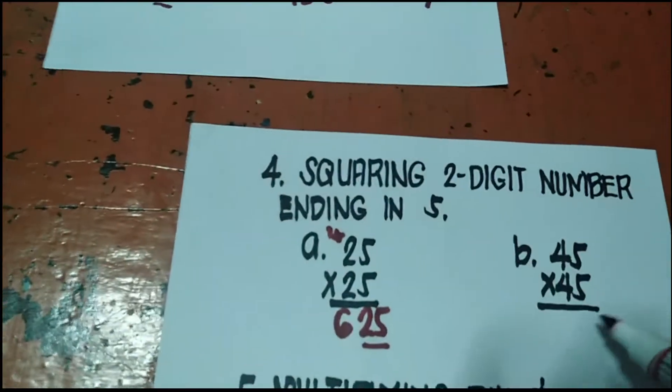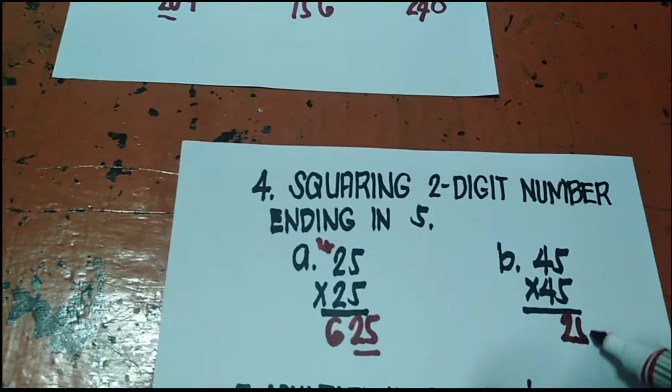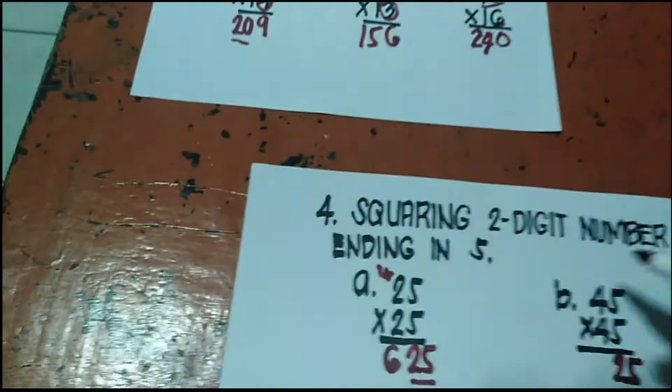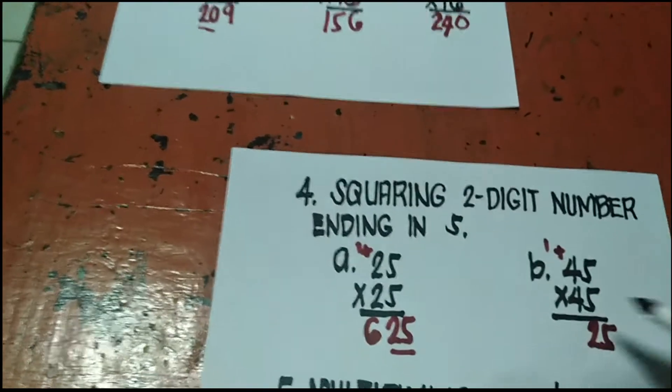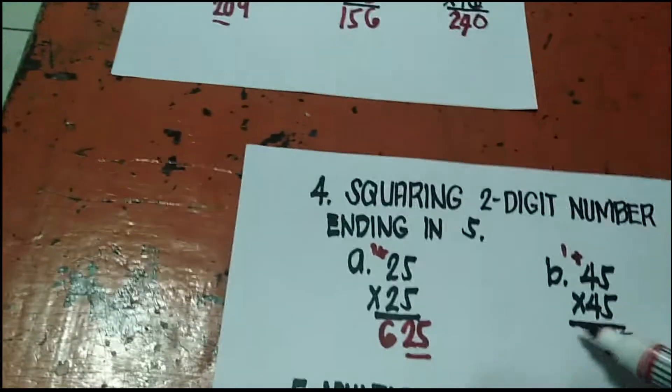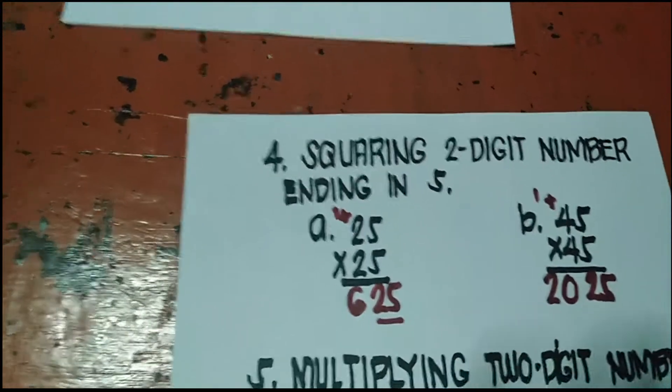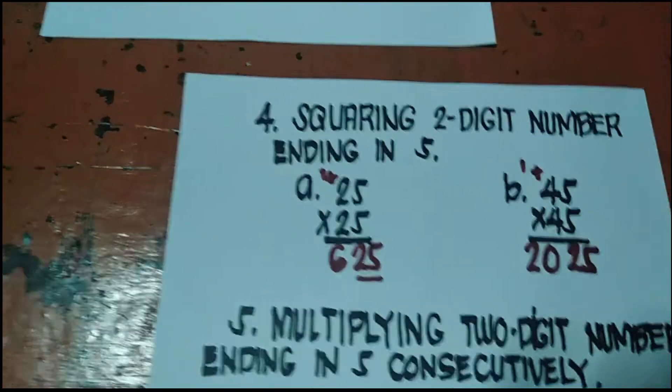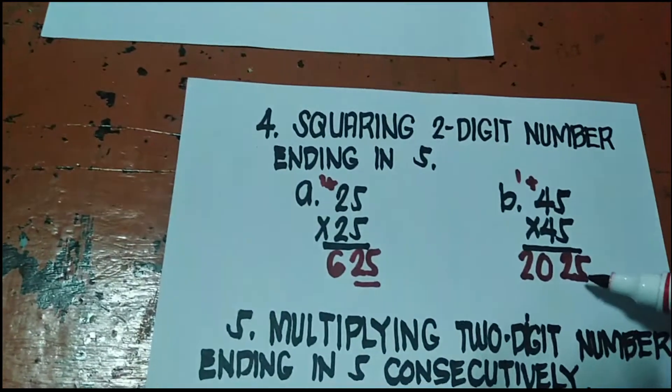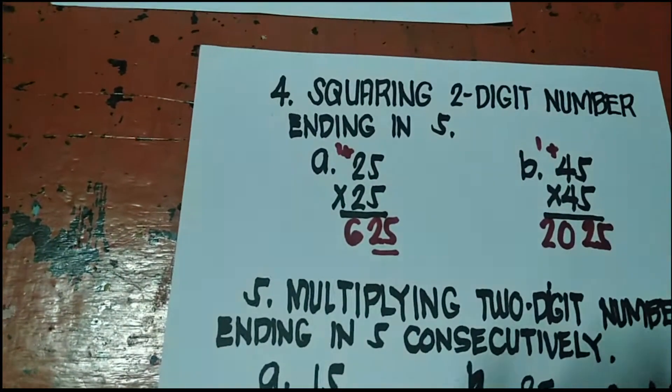Isang example pa. 45 times 45. 5 times 5 is always 25. Tapos dito may constant na 1. 4 plus 1 is 5 times 4 is 20. Ganyan lang pag-squaring 2-digit number ending in 5. So 5 times 5, 25. Tapos 4 plus 1 is 5 times 4, 20. So 2,025.